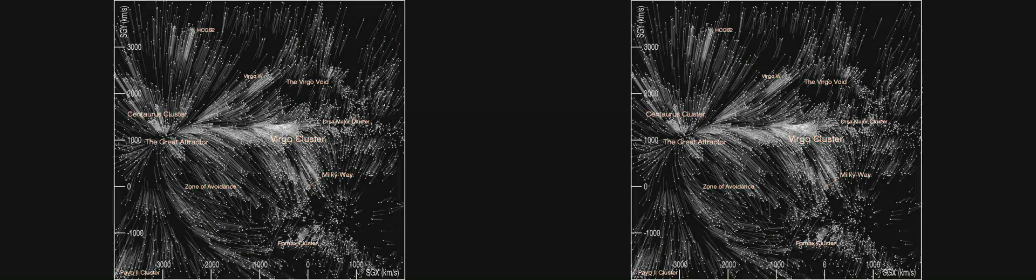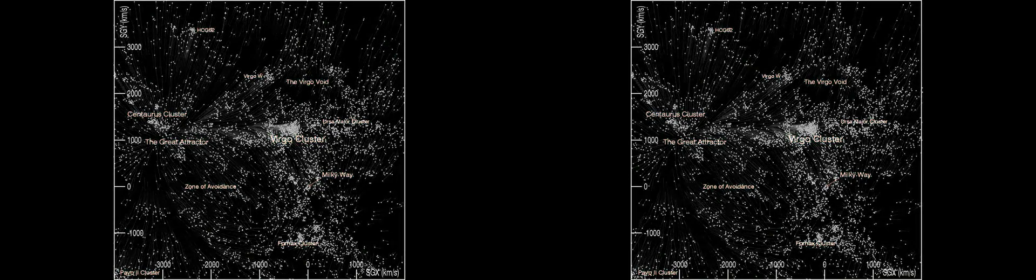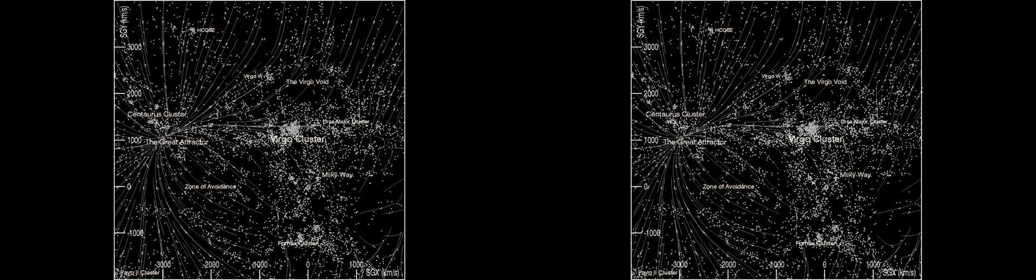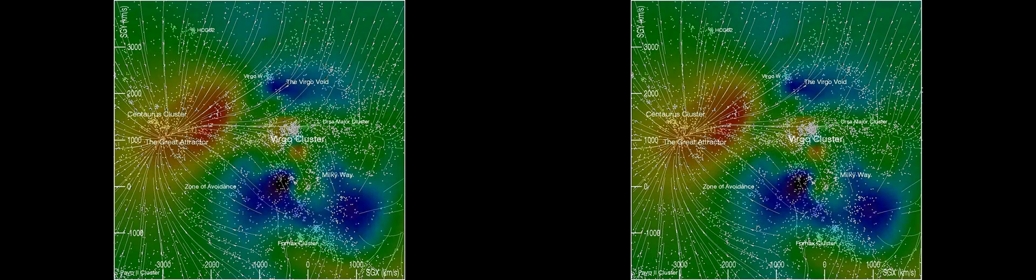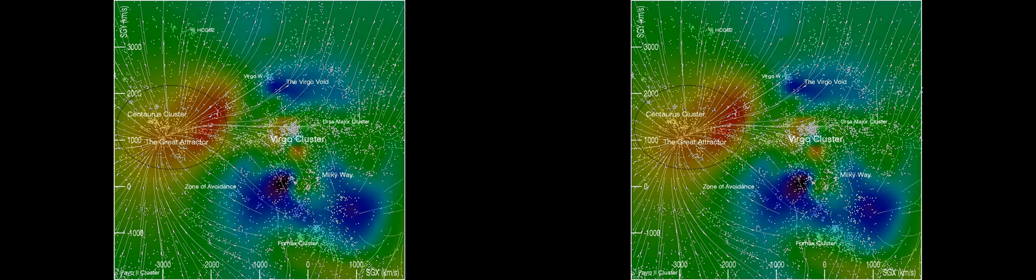Another transition replaces the individual vectors tied to galaxies with velocity flow lines. And adds color to the background to represent the Wiener filter density field associated with the velocity pattern. High density regions are represented in red, and voids are blue. We remark on the importance of the region around the Centaurus cluster.